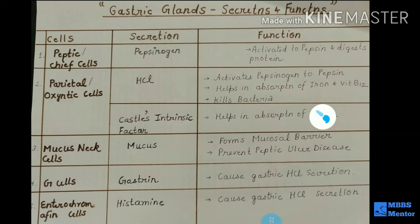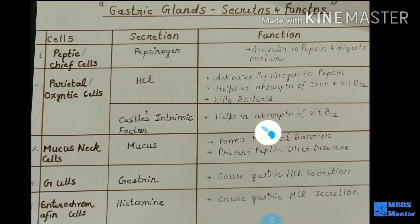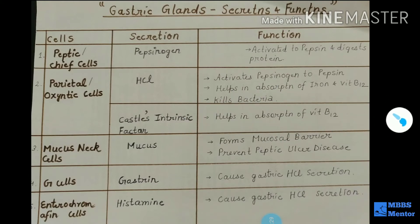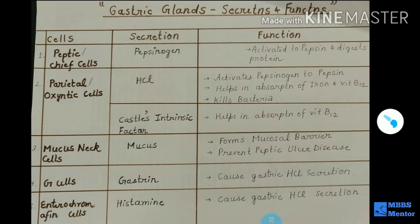Castle's intrinsic factor helps in the absorption of vitamin B12. If this is faulty, it will lead to anemia. There are various types of anemia, which we will discuss at a later time.